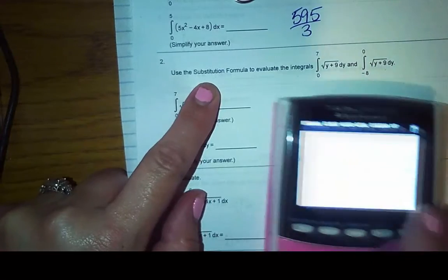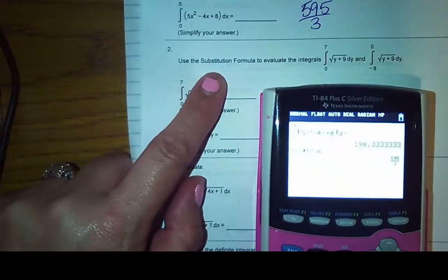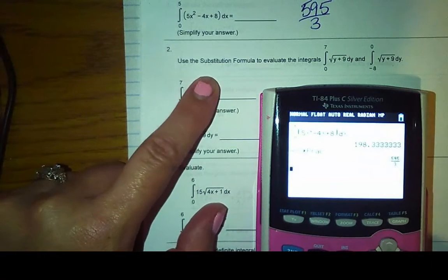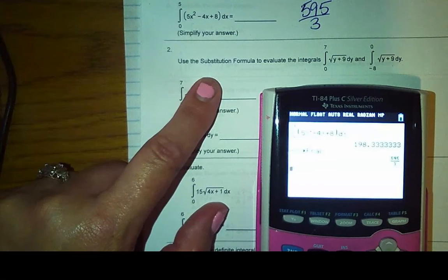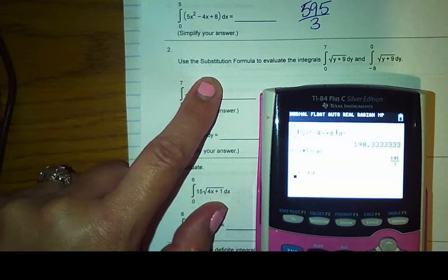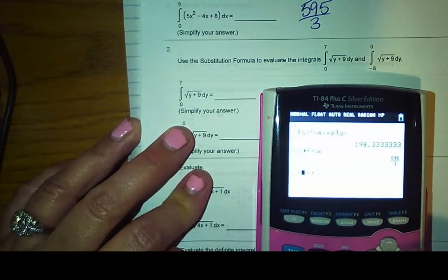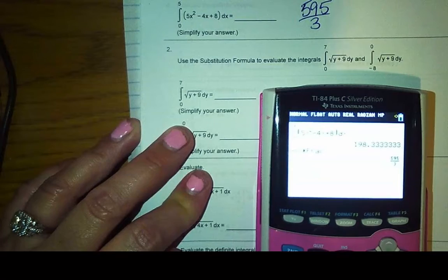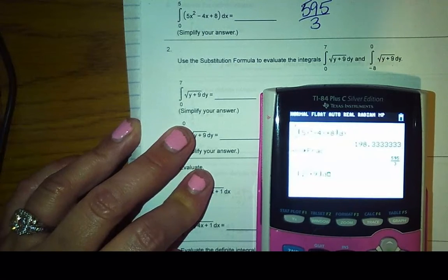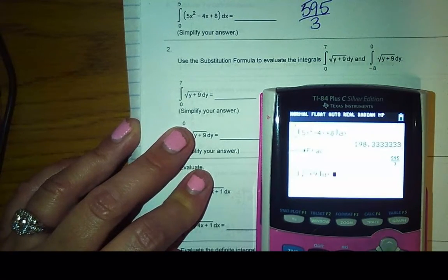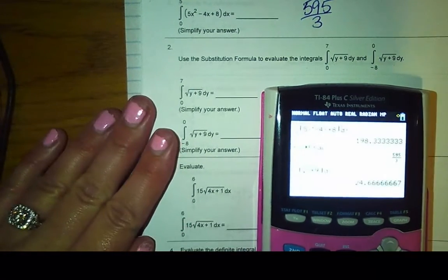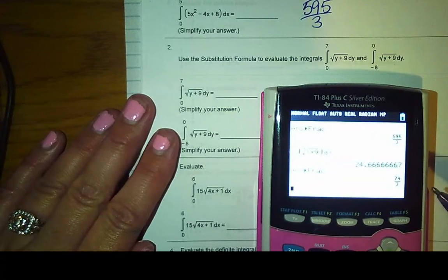So this one says to use the substitution formula. Well, I have a calculator that at this point, I know how to integrate. And so I'm just going to give you, this is my gift to you at the end of the coronavirus semester. So I'm going to hit math nine. My limits of integration are from zero to seven. And then I've got the square root. It says Y plus nine. I don't care. I'm going to put X plus nine, and then do X. Hit enter, and I get 24.666. It says simplify your answer. So I get 74 thirds.